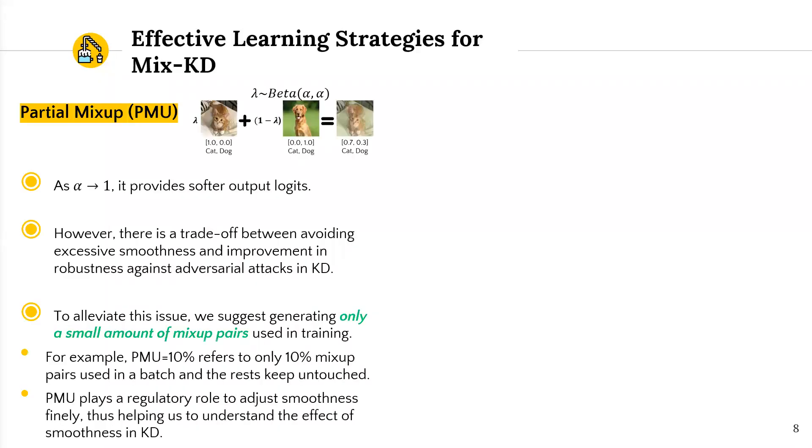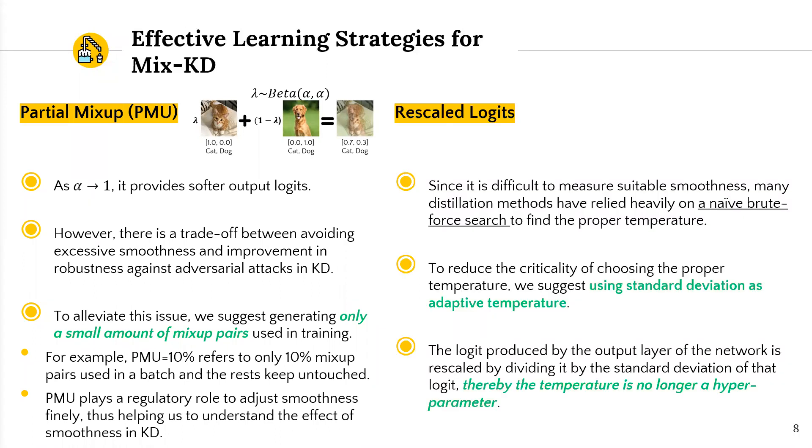Based on our findings, we suggest effective learning strategies: partial mix-up, which is to generate only a small amount of mix-up pairs used in the training, and rescale logit by using standard deviation as a temperature. Thereby, the temperature is no longer a hyperparameter.